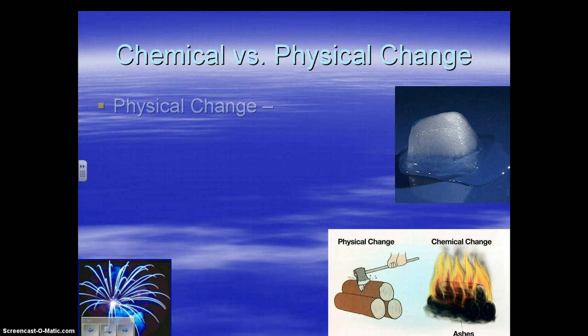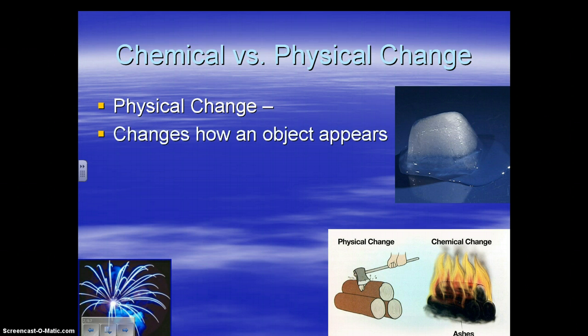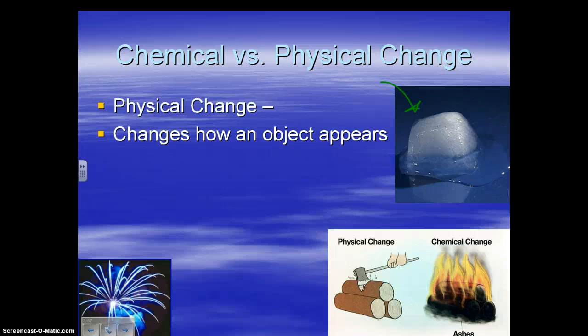What is a chemical change and what is a physical change? A physical change is how an object appears that changes. A nice example would be ice changing form — it's melting into water. That's a physical change because whether it's frozen or not, it's still water. It's just changing how it looks.